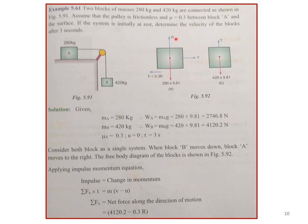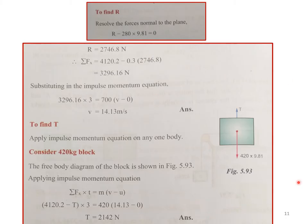After substituting the normal reaction, the net force in the direction of motion is 3296.16 N. Applying the impulse-momentum equation for the combined system, we get the velocity of the blocks after 3 seconds. To find tension T, apply the impulse-momentum equation for block B alone: (4120.2 − T) × 3 = (mass of B) × v. This gives tension T = 2142 N.